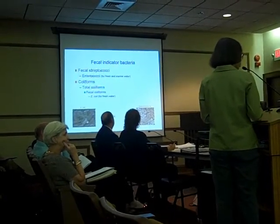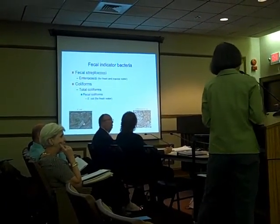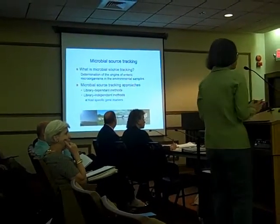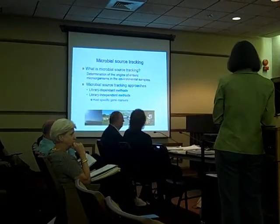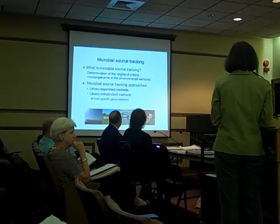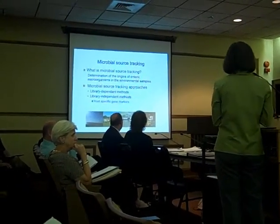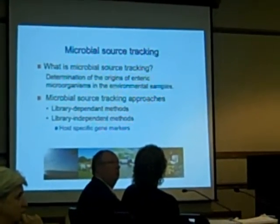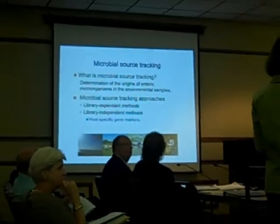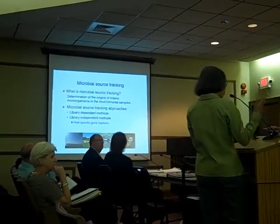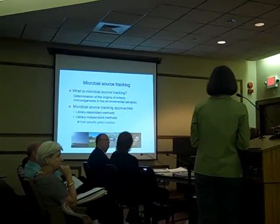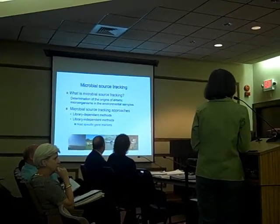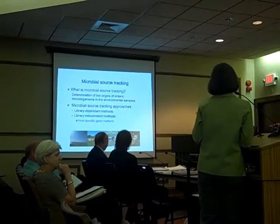So in order to figure out the sources of contamination, we have to do microbial source tracking studies. Microbial source tracking is the determination of the origins of enteric microorganisms in environmental samples. In the early days, we used library-dependent methods — collecting fecal indicator organisms from different animal hosts, building a library, and comparing those organisms with those in the environment. It is a fairly labor-intensive and tedious procedure, and there are other drawbacks as well. Nowadays, the method of choice is the use of host-specific gene markers.